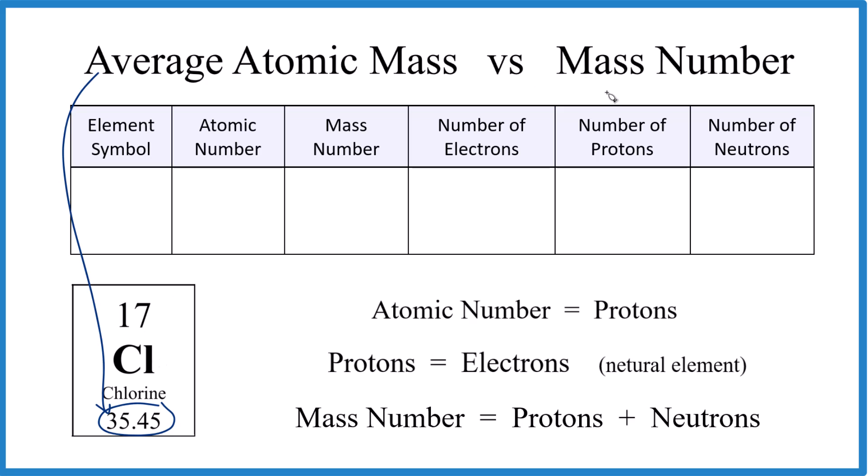For the mass number, we figure that out based on the number of neutrons. So let's take a look at an isotope of chlorine here. It has 18 neutrons. So that's one common isotope of chlorine. Since the atomic number here, this is the atomic number, 17,